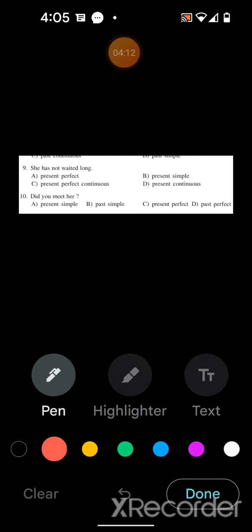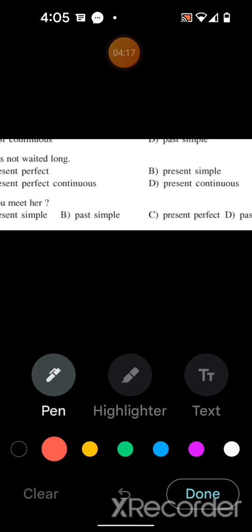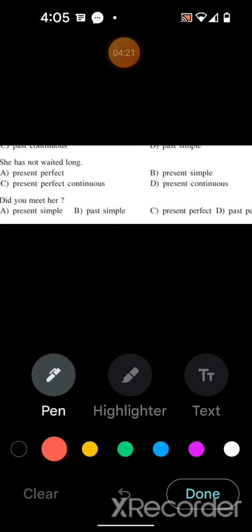Now sentence number nine: she hasn't waited long. Here you notice, which tense is this? This is the example of the present perfect. Option A. Why? Because present perfect continuous would be hasn't been waiting. Simple present would be waits. Present continuous would be is waiting. So that's why present perfect.